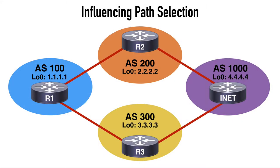Let's now look at the AS path prepend option. We have a topology with four autonomous systems. In AS1000 we're connected to the internet via R1, which has two paths: through AS200 or AS300, routers 2 and 3 respectively. We want R1 to prefer the path through AS200. The AS path attribute is a well-known mandatory attribute present for all exchanged prefixes, used for loop prevention. By prepending an AS number we can artificially make a route appear longer, influencing BGP path selection.